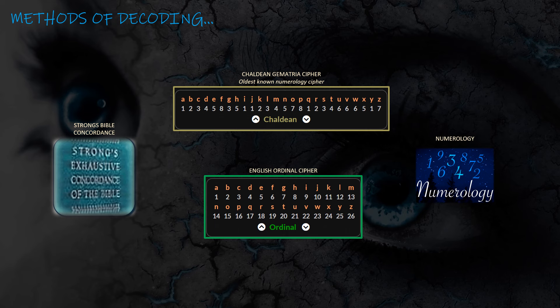It pairs very well with the English ordinal cipher, which is a very simple cipher matching the number one to A and the number 26 to the letter Z. It also gives us higher scores, providing another avenue to explore bigger numbers. The English ordinal cipher pairs very well with the Bible, and I use the Strong's Bible Concordance — a concordance of the Hebrew and the Greek. The Old Testament written in Hebrew was indexed by number, and the New Testament written in Greek was also indexed by number. In this decode I stuck primarily to Strong's Concordance, the Chaldean, and the English ordinal cipher.